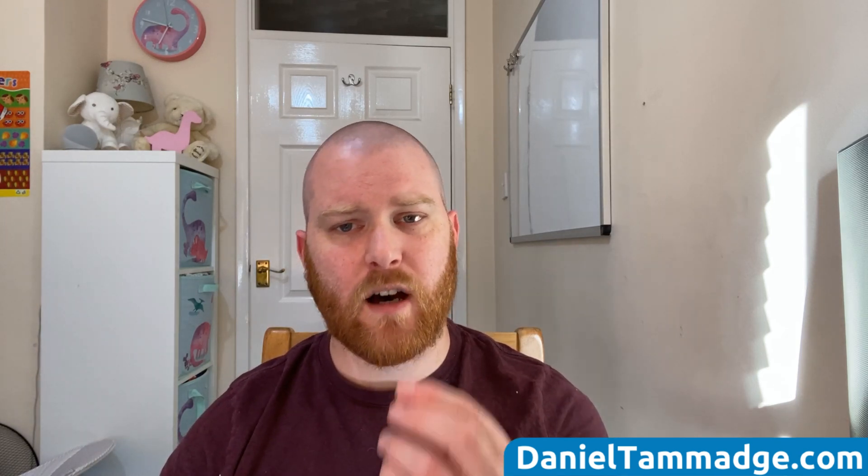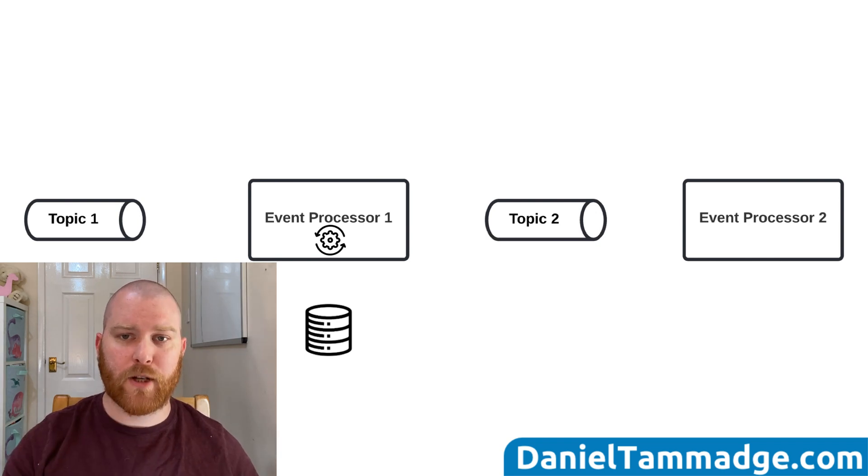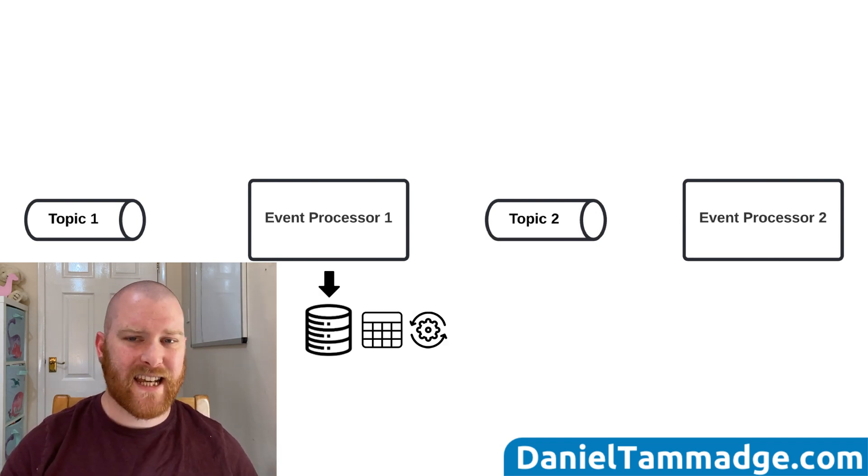It is when a request or event processor performs its database transaction operation but does not publish the occurred event afterwards. Instead, during a database transaction, a record or multiple records are inserted into a dedicated database table — the outbox table — which holds the records you want to publish to a specific event stream, and another process publishes them later. And so that is the outbox pattern.